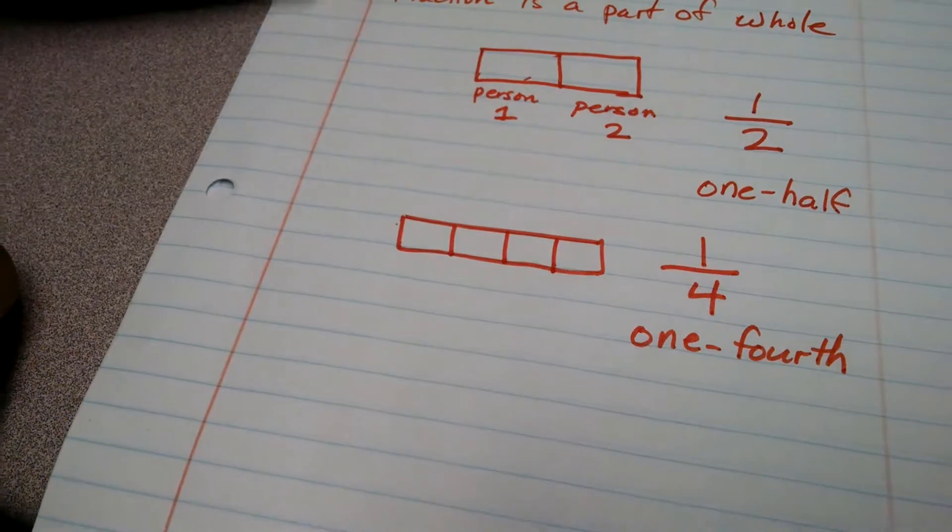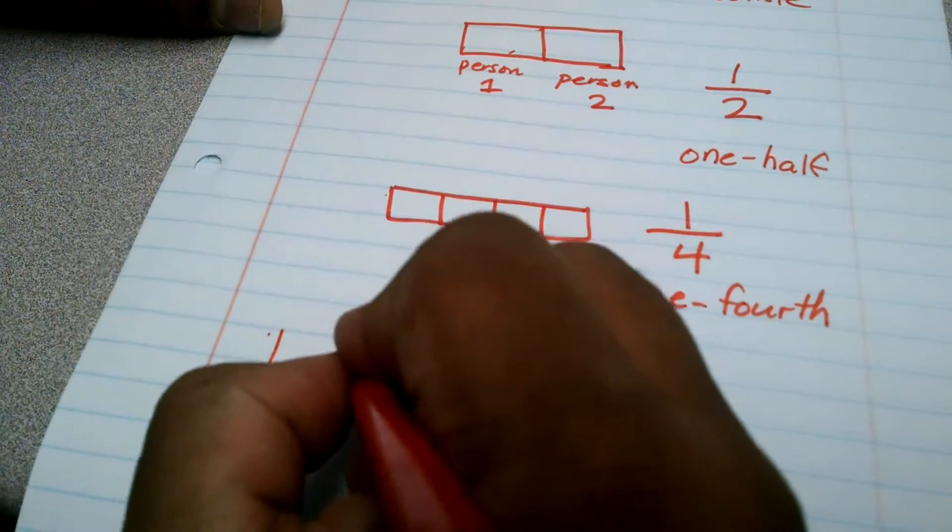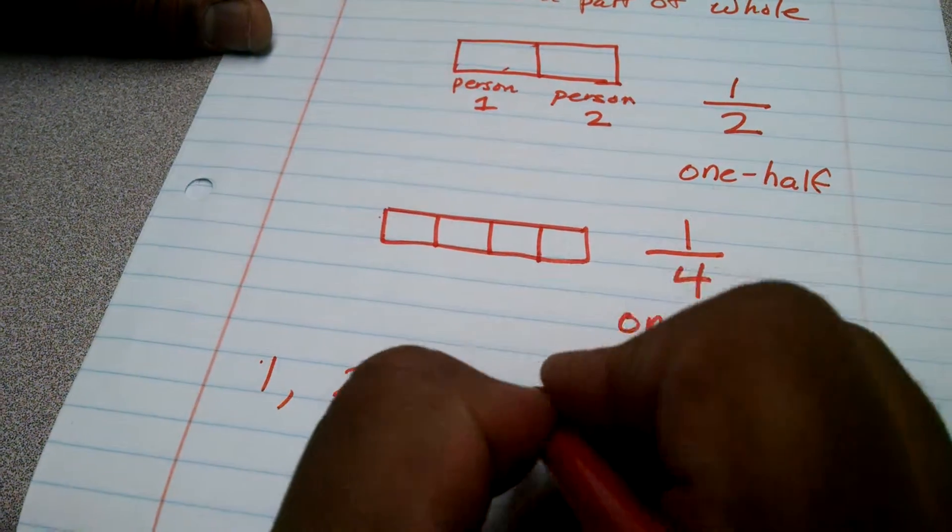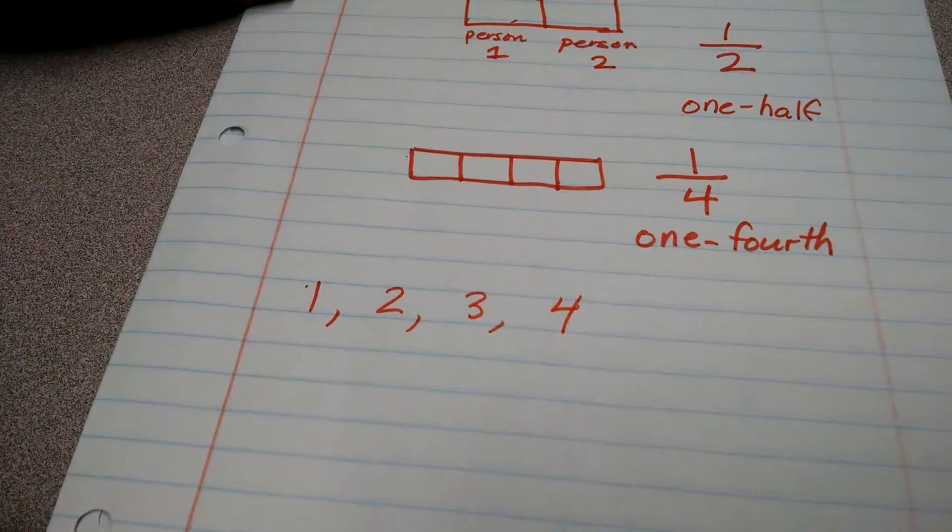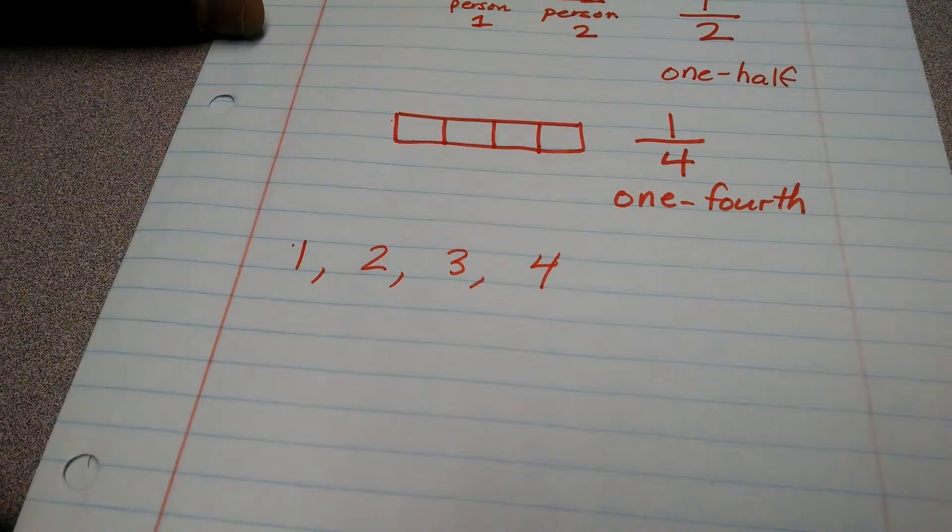are also numbers. When you learn to count, you count by ones: one, two, three, four. But fractions are also, like I said, parts of a whole. So let's say I wanted to count by fractions, I could